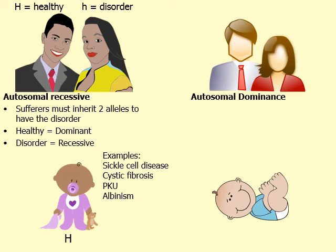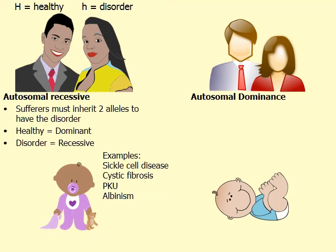If a child inherits a dominant allele from the dad and a dominant allele from the mom, this combination is called homozygous dominant; the child would be born healthy and would not have cystic fibrosis, sickle cell, or albinism. But if the dad passes on a dominant allele and the mom passes on a recessive allele, the child still has one healthy dominant allele, so the child will be healthy. This combination is called heterozygous; the child is healthy but we call them a carrier because they still carry the recessive allele in their DNA and could pass it on to their own children.